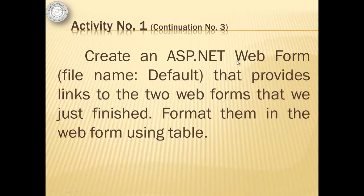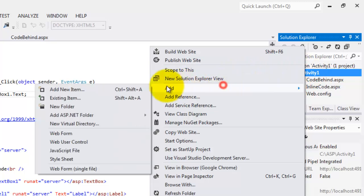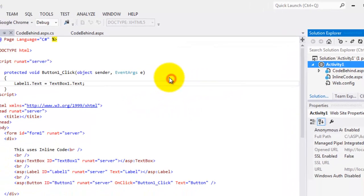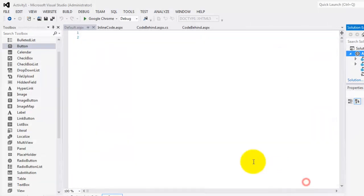The last web form for this activity is called Default, and it will provide links to the two web forms we just finished. We're going to use a Table to format these links. Right-click Activity1, Add, Add New Item, web form, C Sharp. The name is already correct. Make sure the checkbox for Place Code in Separate File is checked. Click Add.